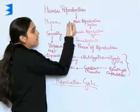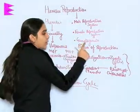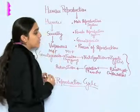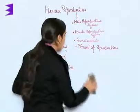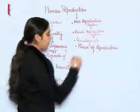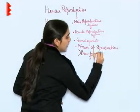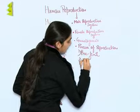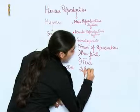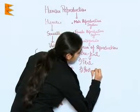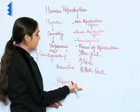In this chapter we will be studying the male reproductive system, the female reproductive system, gametogenesis, and the process of reproduction. The process of reproduction involves pre-fertilization events, fertilization, and post-fertilization events — all of which we will be studying in this chapter.